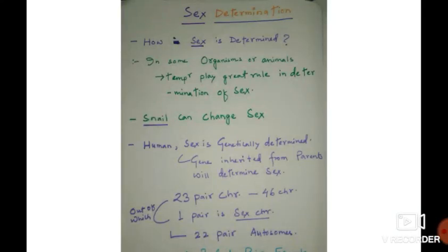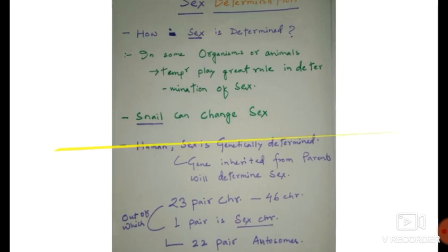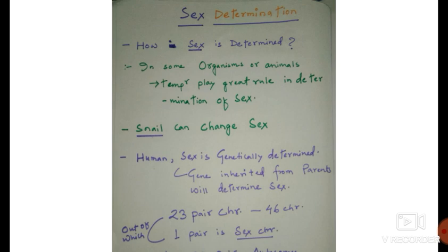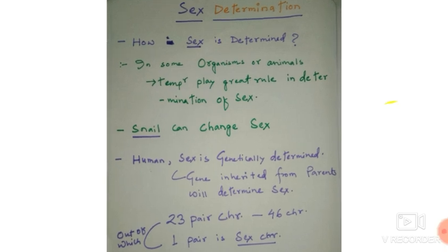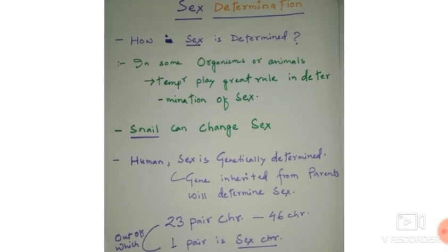Hello everyone. This is my second video on sex determination from the Evolution and Heredity chapter 9, NCERT Class 10 book. Firstly, I will tell about how sex is determined in an organism — human beings or any other animals found on our globe. We will see that there are different approaches to determine sex in different organisms.